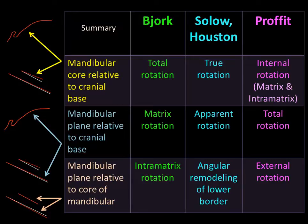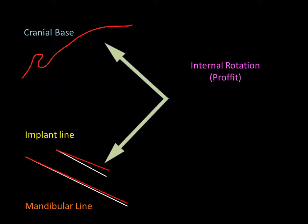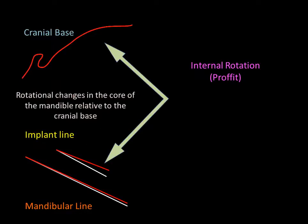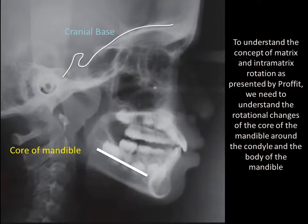As we see here, the same phenomenon has been given different names by different scientists. Now let's consider internal rotation, which is the rotational change in the core of the mandible related to the cranial base. Prophet divided internal rotation into two components: matrix rotation and intramatrix rotation. To understand this concept, we need to understand the rotational changes in the core of the mandible around the condyle and the body of the mandible.